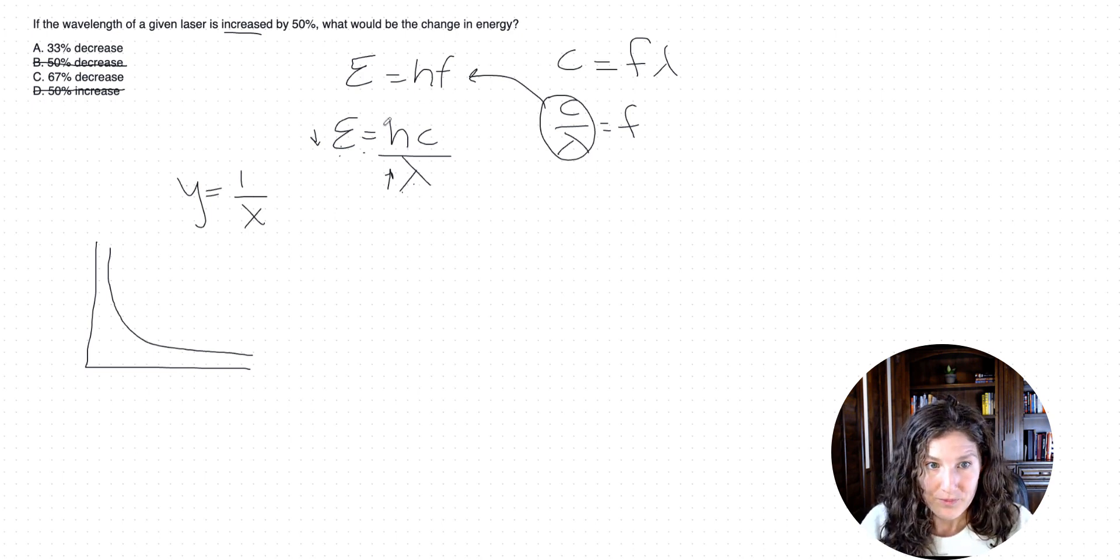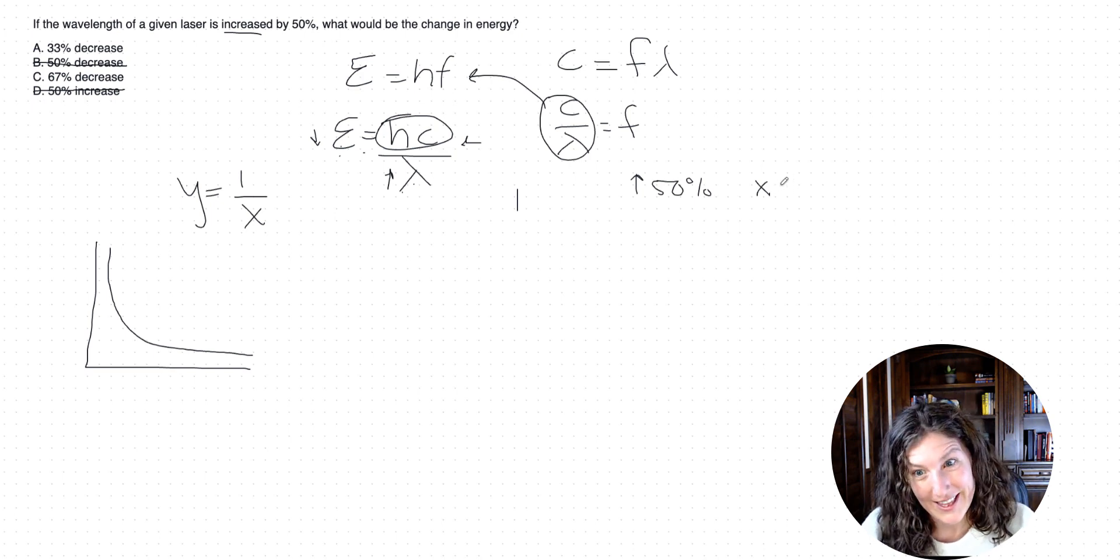So for this question, I want us to consider Planck's constant and the speed of light to be constants because that's true on test day. So let's not worry about them. I'm just going to relabel them as one for right now because they're not relevant to our relationship here. They'll be the same in both cases because we're looking for a change. And now let's talk about what does an increase by 50% mean? Well, what it means is that we had our original amount x, and then we increase that by half as much as it already was. So if we do this multiplication-wise, that would make this 1.5 times x, because that gets what we originally had plus another half.